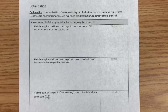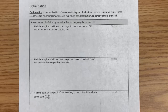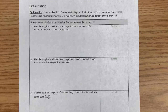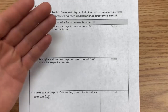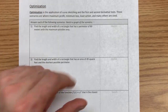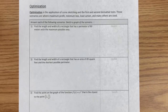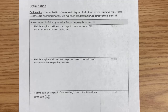Today we're going to be looking at optimization problems. Optimization problems are basically just finding the critical points on a graph and saying: where's the highest point, where's the lowest point? Scenarios where you might run into these include finding maximum profit, minimum loss, or the path of least action. Basically, peaks of curves and troughs of curves are what we're trying to find.